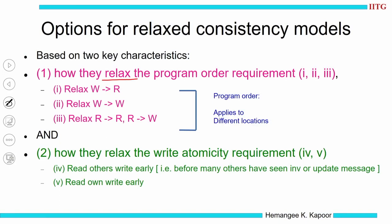To derive the relaxed consistency models, the options I am exploring are: relaxing the program order by either relaxing write after read or write after write. I will discuss models which relax these one by one. The first relaxation is WR order, the second is relaxing WW, and the third is read followed by read and write. These are all program orders to different locations — remember they are to different locations.